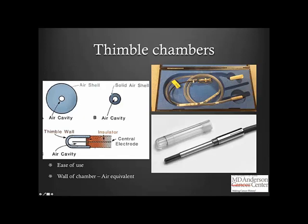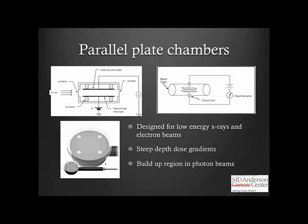Parallel plate chambers have a disc or pancake shape with two electrodes and an air volume between them with a high voltage applied. The beam — X-rays or electrons — typically enters through a window. These chambers are better suited for measurements in steep depth dose gradients such as electron beams, and also when measurements must be made in the build-up region. Regardless of the chamber type, the chamber must be connected to an electrometer, which provides the voltage across the chamber.